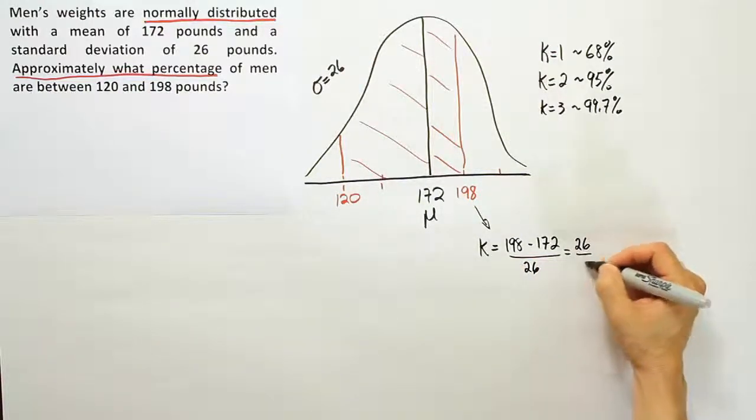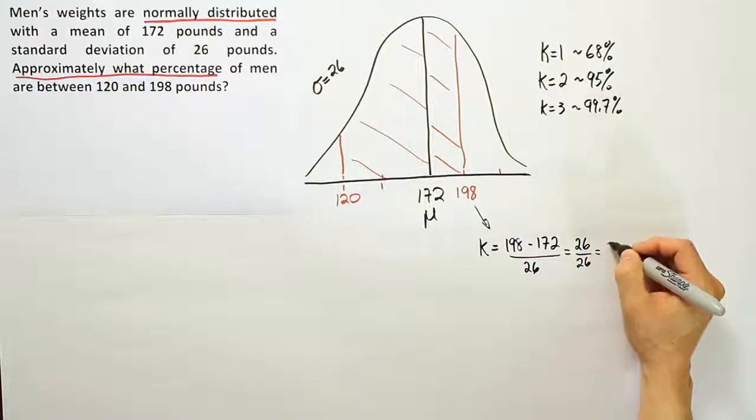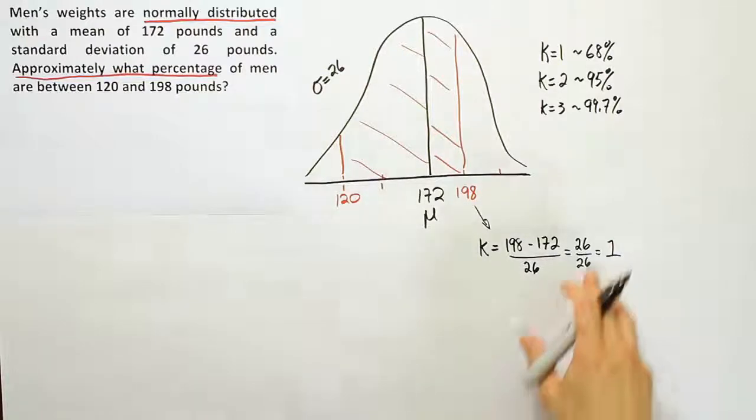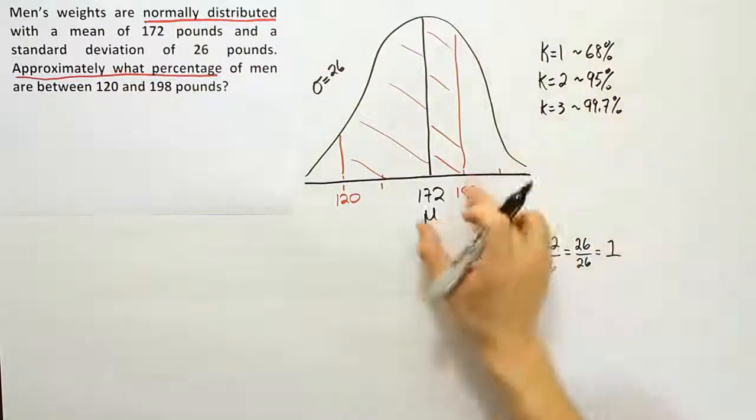Dividing by 26, I end up with 1. So now I know that that's one standard deviation above average, one standard deviation above average. Why is that helpful? Well, this curve is symmetric - the bell curve is symmetric.